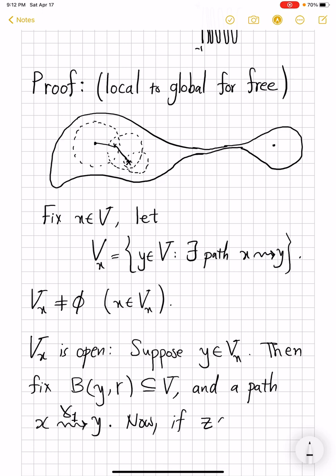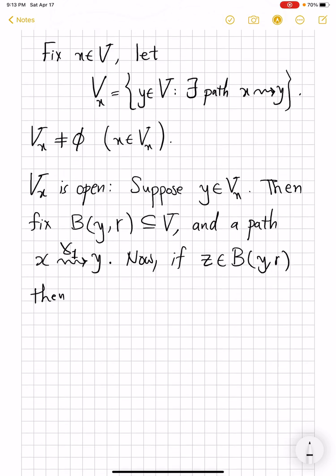Now if z is some point from this ball, then let the path from y to z, which we call γ₂, be the line segment between them, which is completely contained in your ball, so it's completely contained in V. Therefore from x you can go to z by first going with γ₁ and then joining it, concatenating it with γ₂.